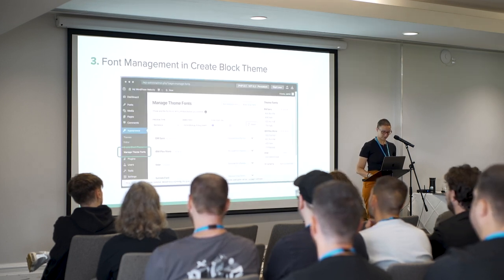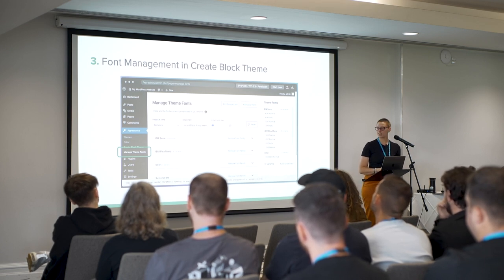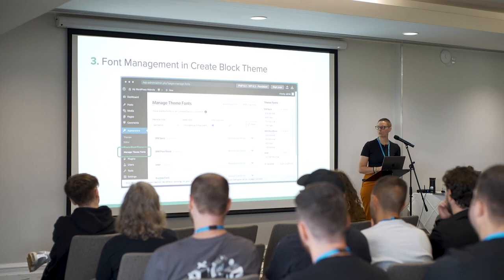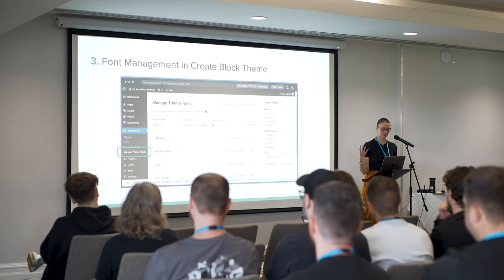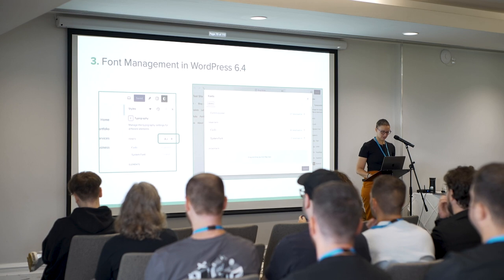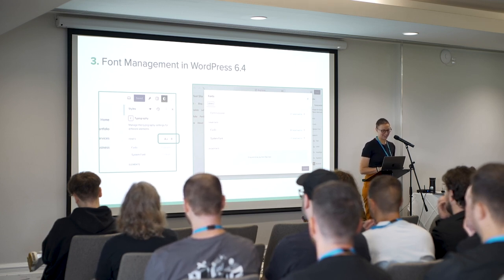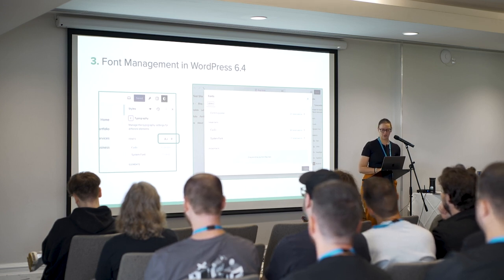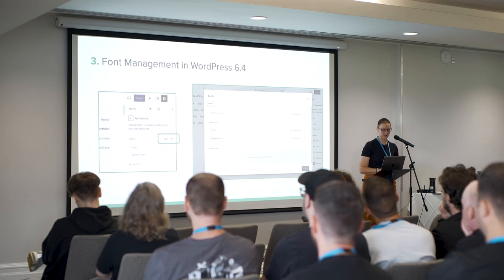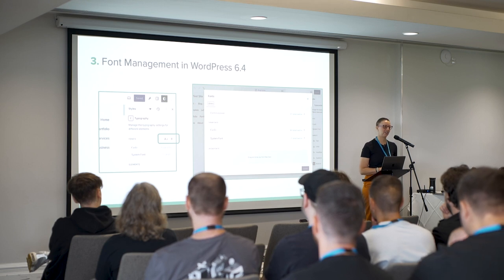Next up is font management, which you can currently access if you have the Create Block Theme plugin installed, under Appearance > Manage Theme Fonts. This allows you to upload font files from your local machine and browse the Google Fonts directory — the font files are saved in your theme's assets/fonts directory, so they won't be hosted on Google. Font management is also coming to WordPress 6.4, launching November 7th. It functions very similarly to the plugin version but is fully integrated into the editor. With this version, font files are stored in the wp-content/fonts directory globally rather than tied to the active theme — similar to how media library assets are currently stored.